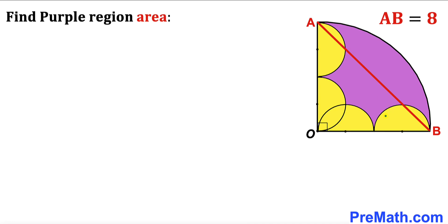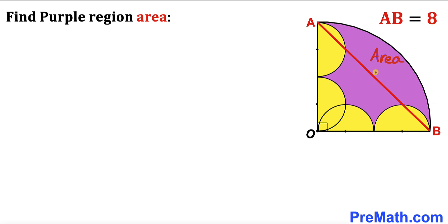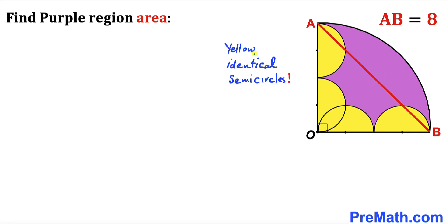Welcome to Pre-Math. In this video we have four yellow semicircles fully inscribed in a quarter circle with center O, as you can see in the diagram, such that chord AB is eight units long. Our task is to calculate the area of the purple shaded region. These yellow semicircles are identical.